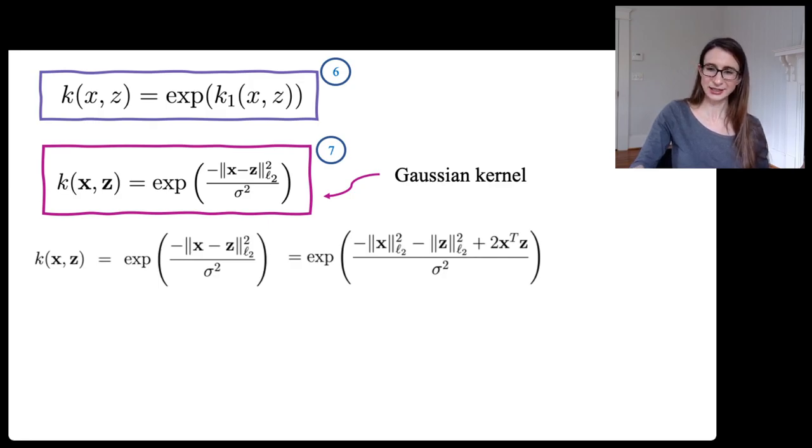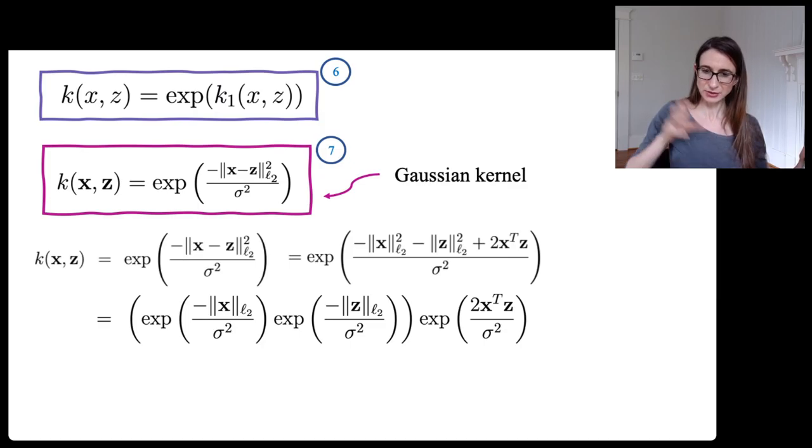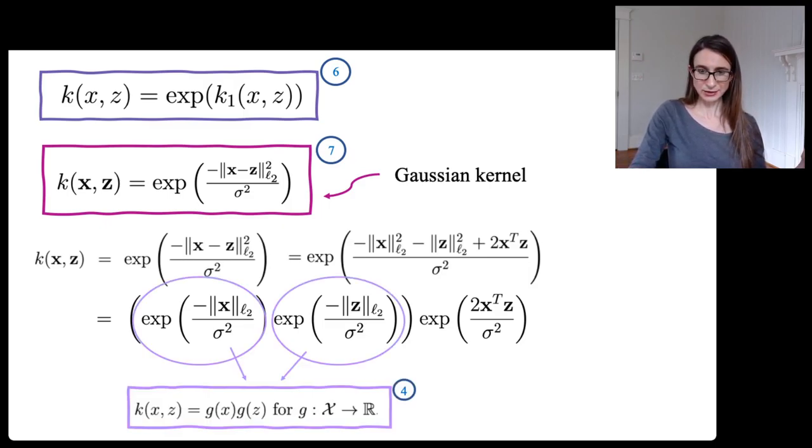Because you can take what's inside the exponent, take that norm, write it out. So there's three terms. There's two terms there and a cross term. And then, because it's the exponential, I can split it up into these three separate actual things that are multiplying each other. Now, the first two of them get handled because of the fact that g(x) times g(z) is a valid kernel. And here we have some function g(x), some function g(z). And so that is a valid kernel.